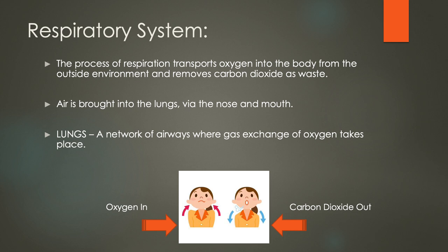The second part of the body we're going to look at is the respiratory system. The process of respiration is transporting oxygen into the body, and the waste gas released is also part of that process. The waste gas which is released is carbon dioxide. Air is brought into the lungs via the nose or the mouth, and inside the lungs is where that gas exchange takes place — it's a network of airways where the gas mixes together and the lungs can absorb the oxygen once the air has been breathed in.